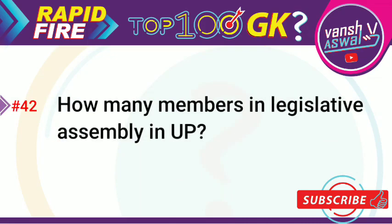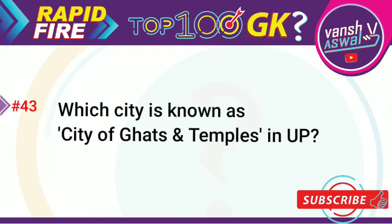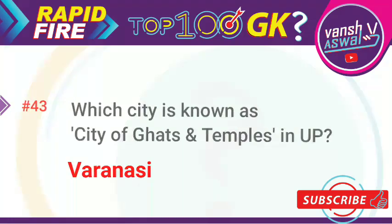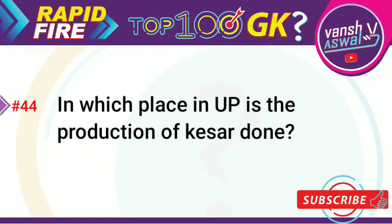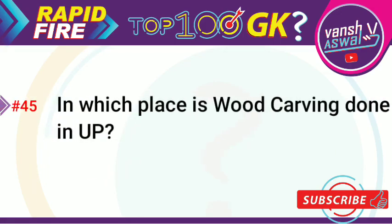Question 42: How many members are in the Legislative Assembly in UP? Answer is 403. Question 43: Which city is known as the city of ghats and temples in UP? Answer is Varanasi. Question 44: In which place in UP is the production of Kesar done? Answer is the Hailey area. Question 45: In which place is wood carving done in UP? Answer is Saharanpur.